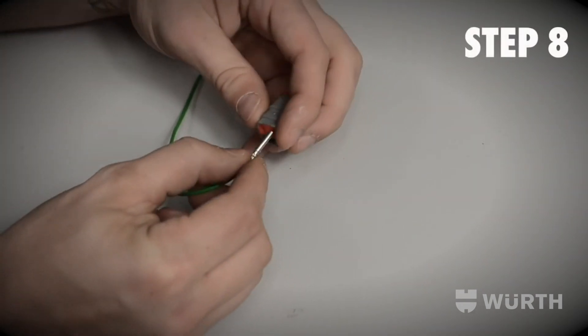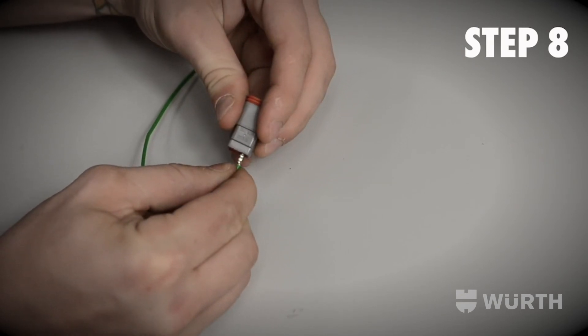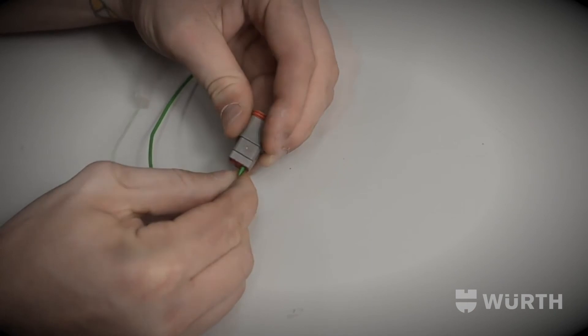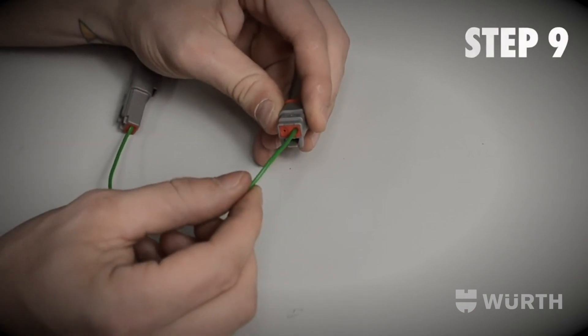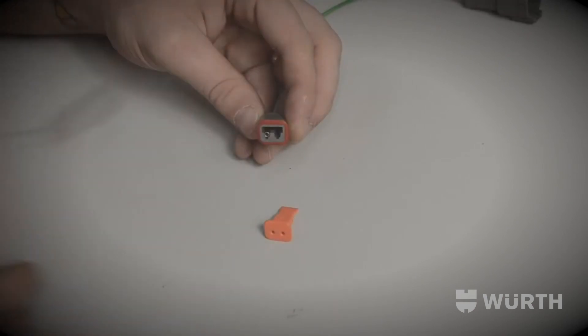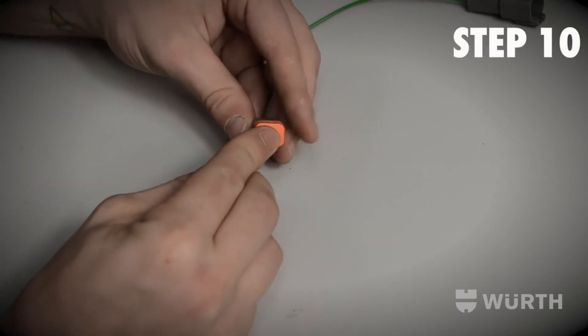Using the female terminals, insert them into the back of the plug once again until you hear a click. Ensure that the rubber insulation is also firmly in place. Insert the wedge into the front of the plug.